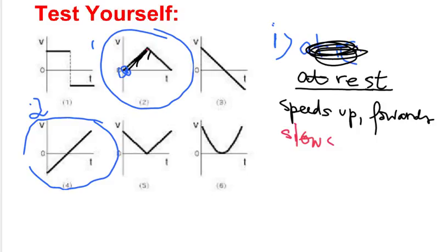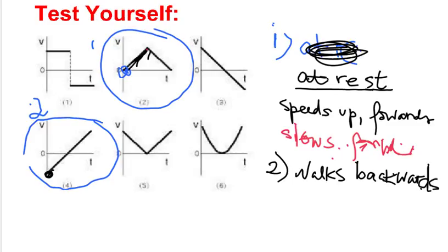Number two starts out going negative, so walking backwards at first — walking backwards, but slowing down. At this point it's going to come to a stop, and then afterwards it's going to be heading forwards.